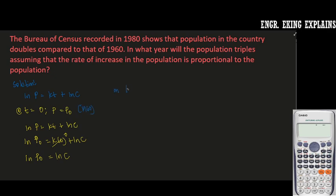On 1980, our T for that one is 20 years, because 1980 minus 1960 is 20 years.